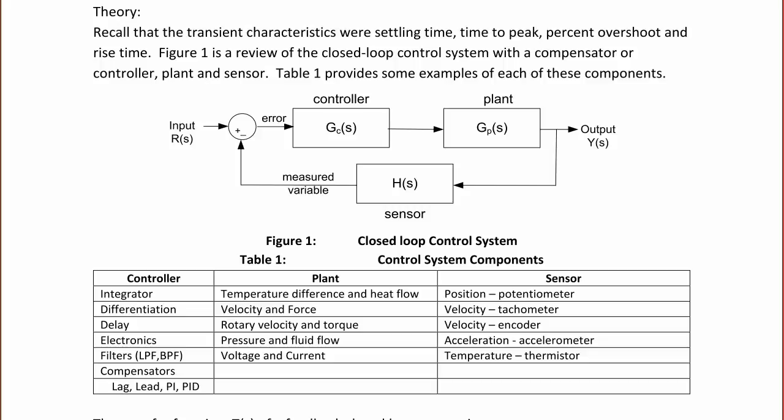A plant could be a temperature difference or heat flow, a velocity or force, a rotary velocity or torque, pressure and fluid current, or voltage and current, or an RC or RLC circuit. A sensor for position could be a potentiometer, velocity could be an encoder or tachometer, acceleration could be an accelerometer, and temperature could be a thermistor or an RTD.